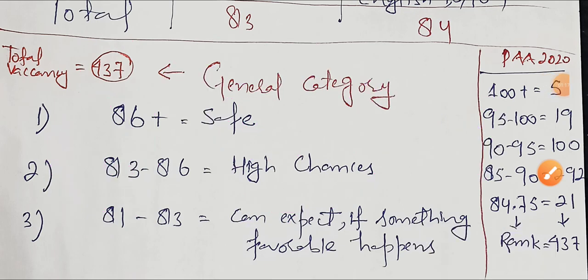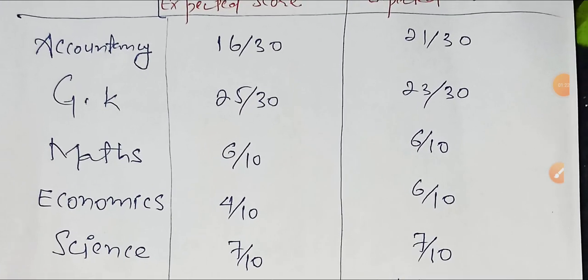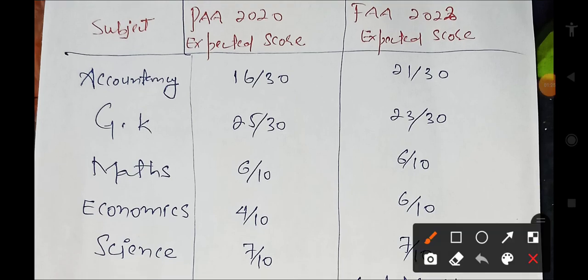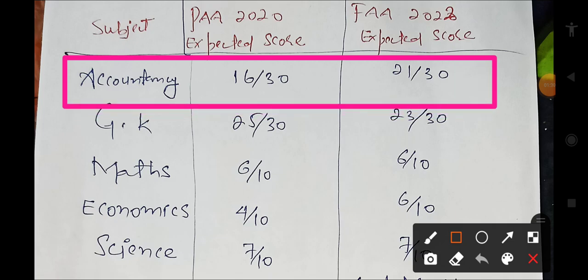If we talk about Punjab Account exam, the Accounting paper was difficult level, where average students scored 21 marks. In Finance Account exam, it was moderate level, so students scored only 16 marks on average.